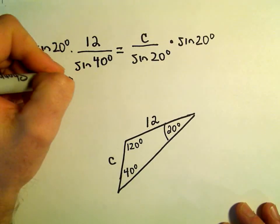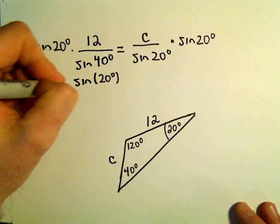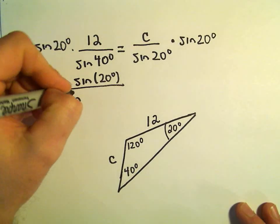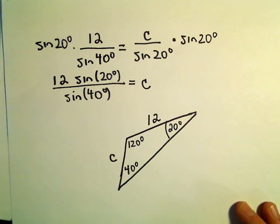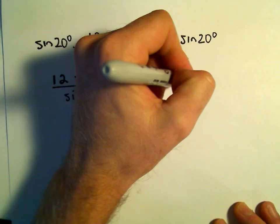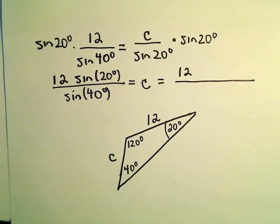So we'll be left with 12 times sine of 20 degrees over sine of 40 degrees. That's our value for c. Now it's just a matter of plugging it into a calculator and simplifying.